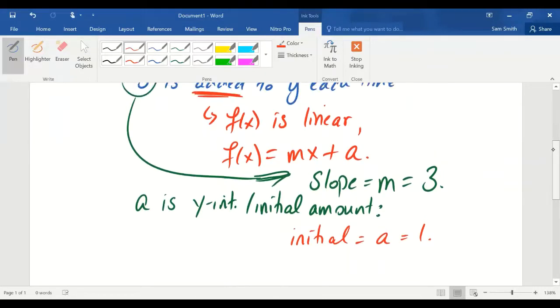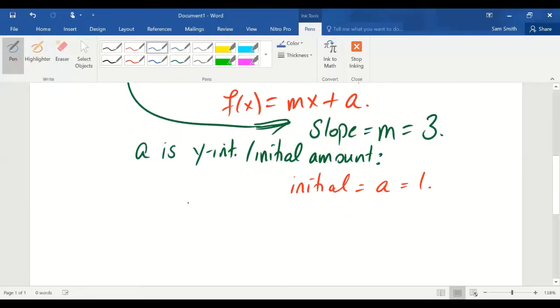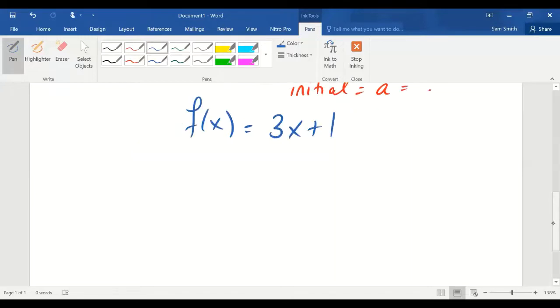The function is linear. The slope is 3, and the initial amount is 1, and therefore the function has the form 3x plus 1. Alright, so now suppose I gave you a slightly different table. New example.